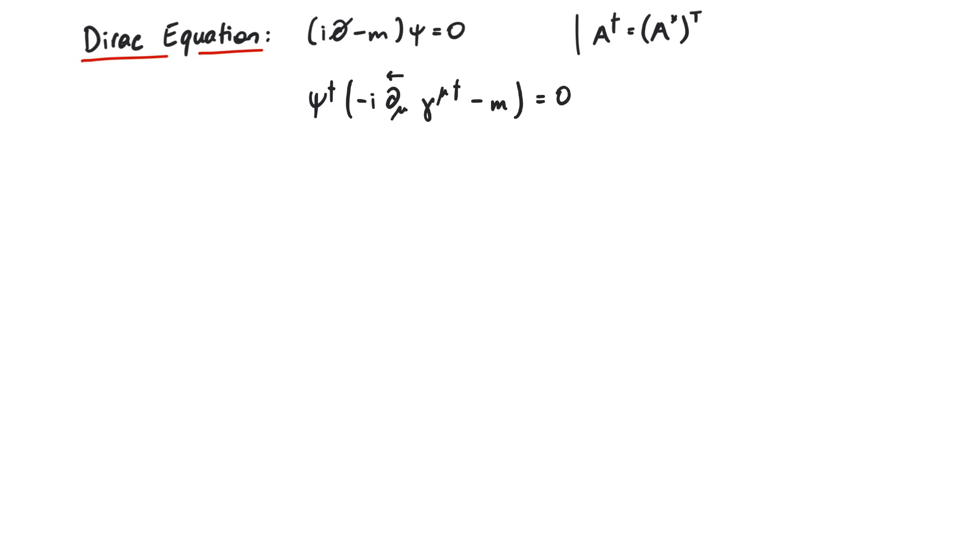Then we have the Hermitian conjugate of gamma mu. And the mass stays the same, since it's a real number. The Hermitian conjugate of a gamma matrix is given by gamma zero, gamma mu, gamma zero. Which means that we can pull out a gamma zero to the left and have psi bar again.